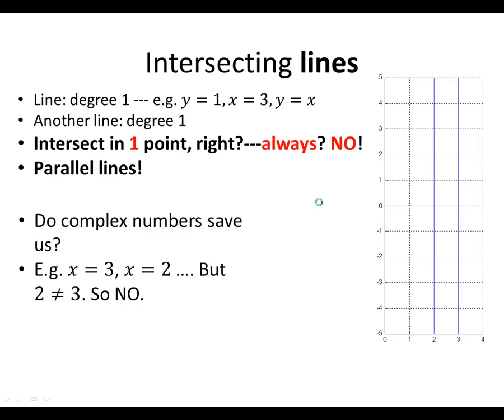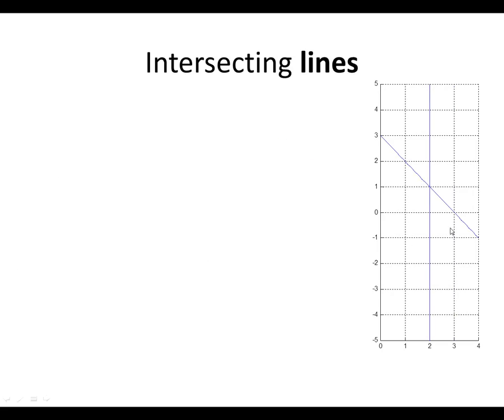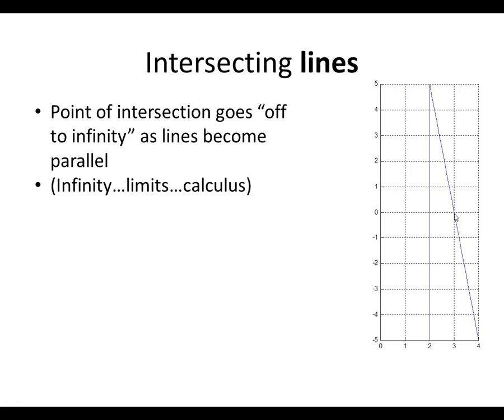So, what we're going to do is we're going to try and sneak up on things here. I'm going to do a little primitive animation here. Instead of having them be parallel, I went ahead and I took this guy and I rotated it around the point 3, 0 so that it would intersect. And now I'm going to rotate it back towards being more and more close to parallel. Notice what happens to the point of intersection. It goes off to infinity as the lines become parallel. Really, this is sort of calculus notions coming in again.